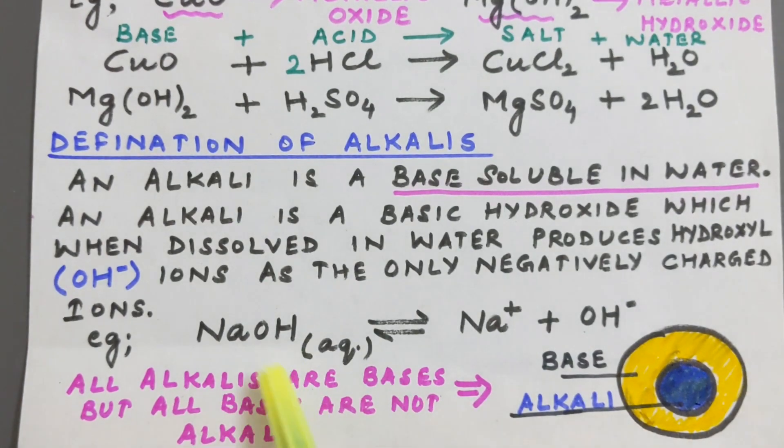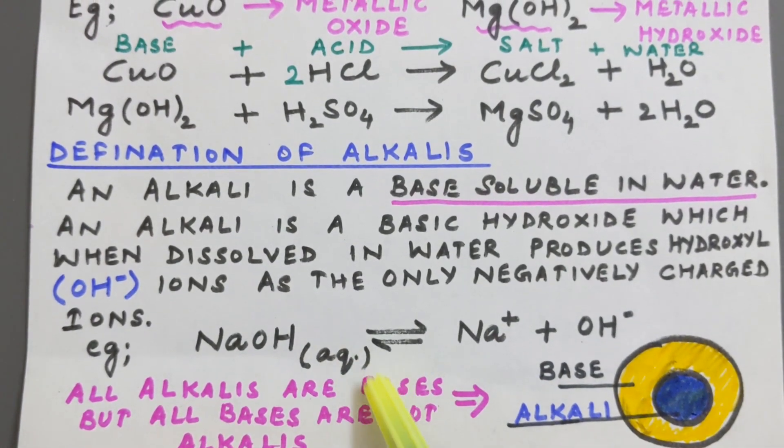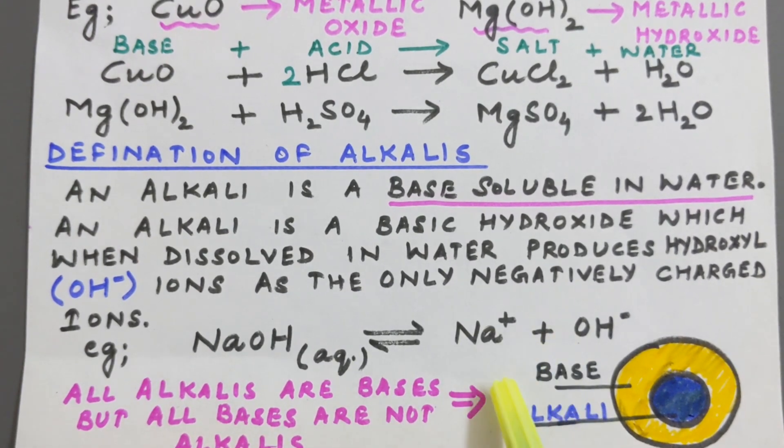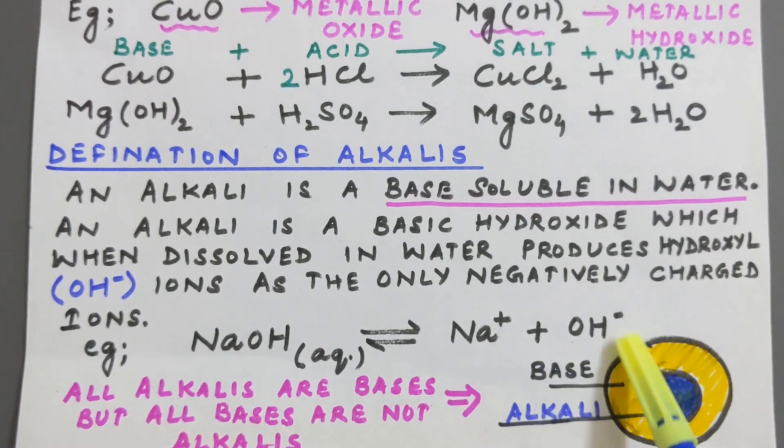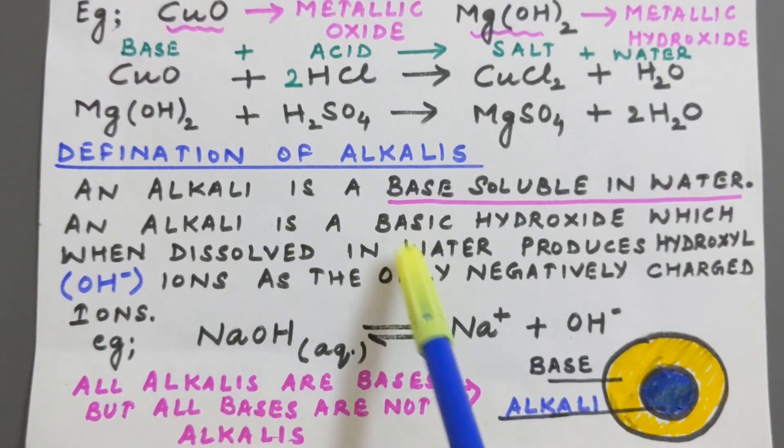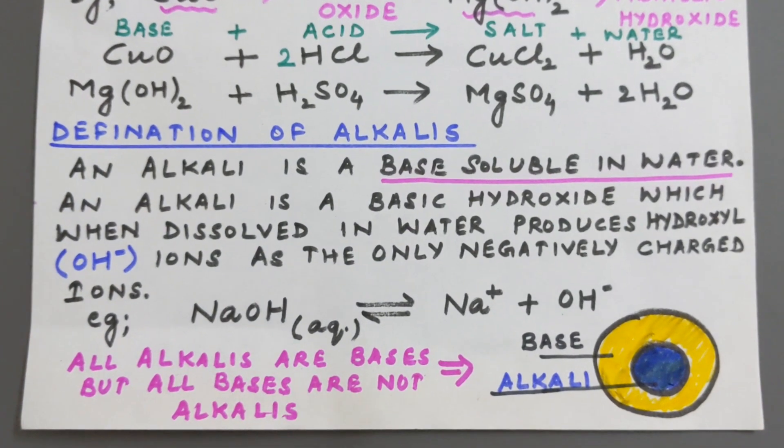As you can see in case of sodium hydroxide NaOH, it will produce in its aqueous state. Aqueous state means if we add it to water, it is going to produce ions, sodium ion and hydroxyl ion OH negative. This is the reason why we call it as an alkali and moreover it is soluble in water.